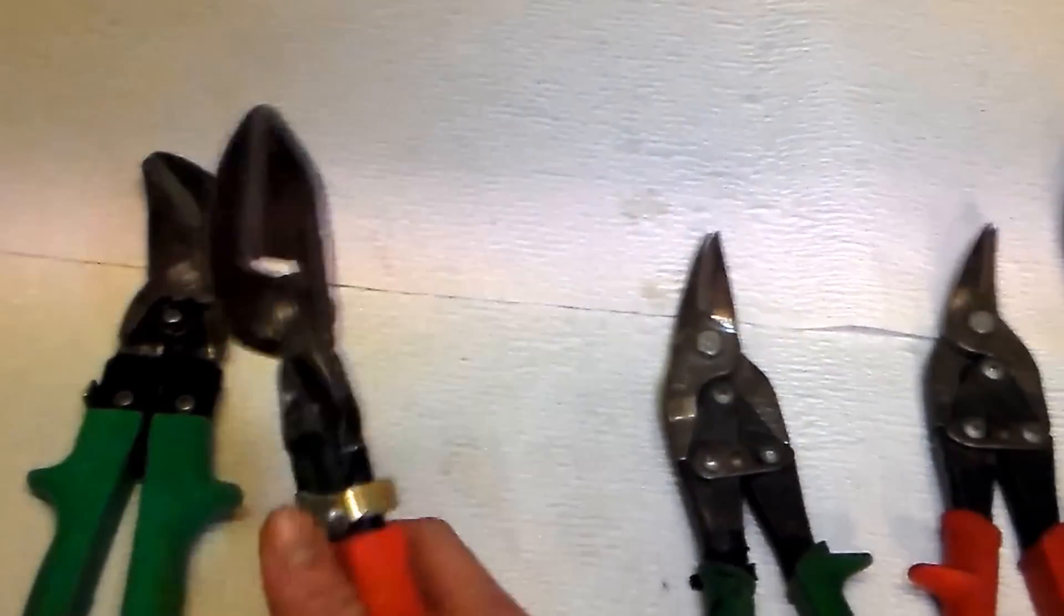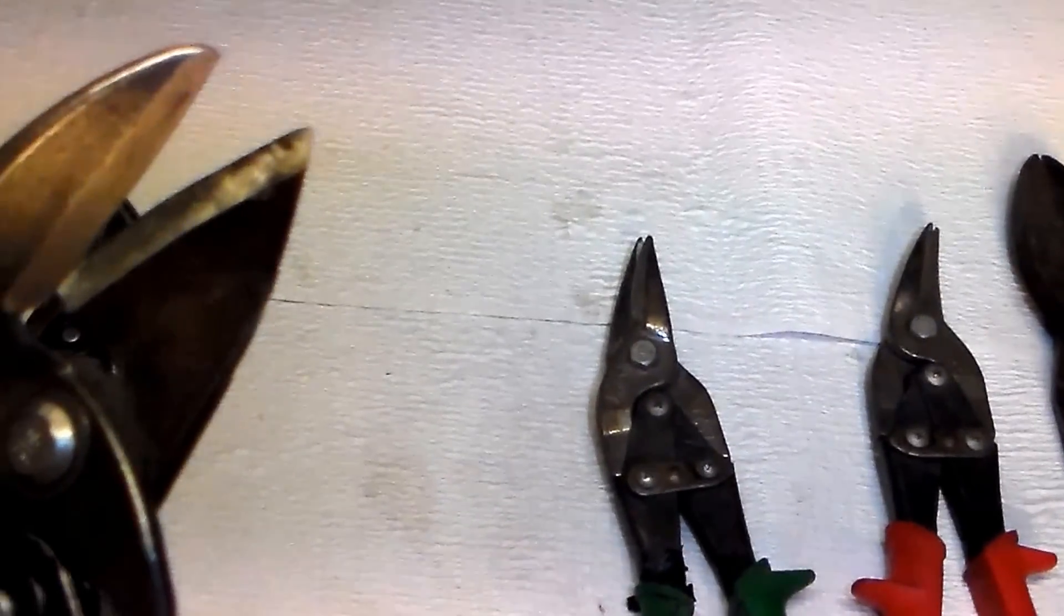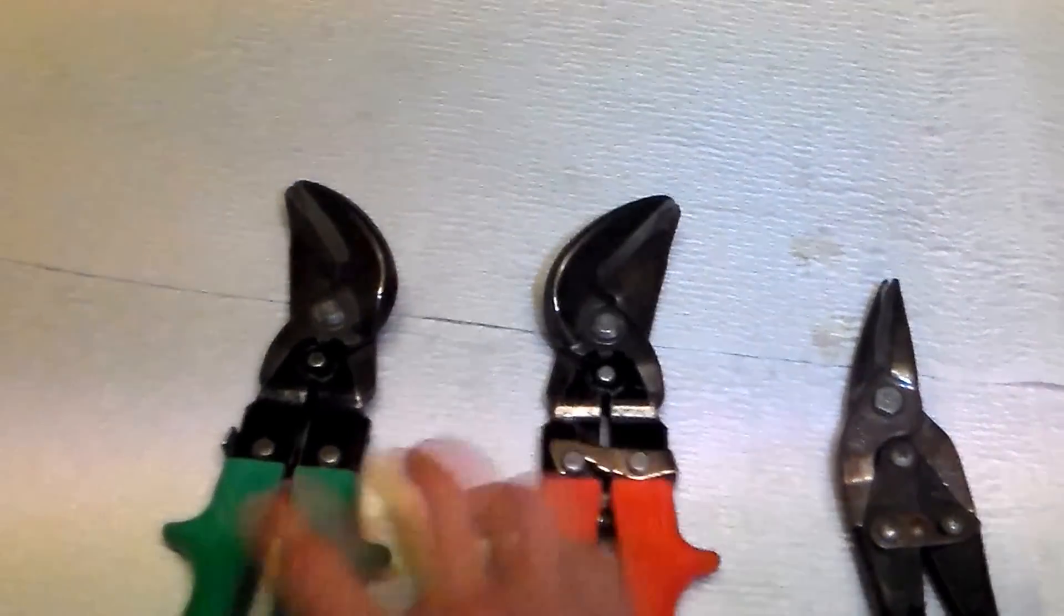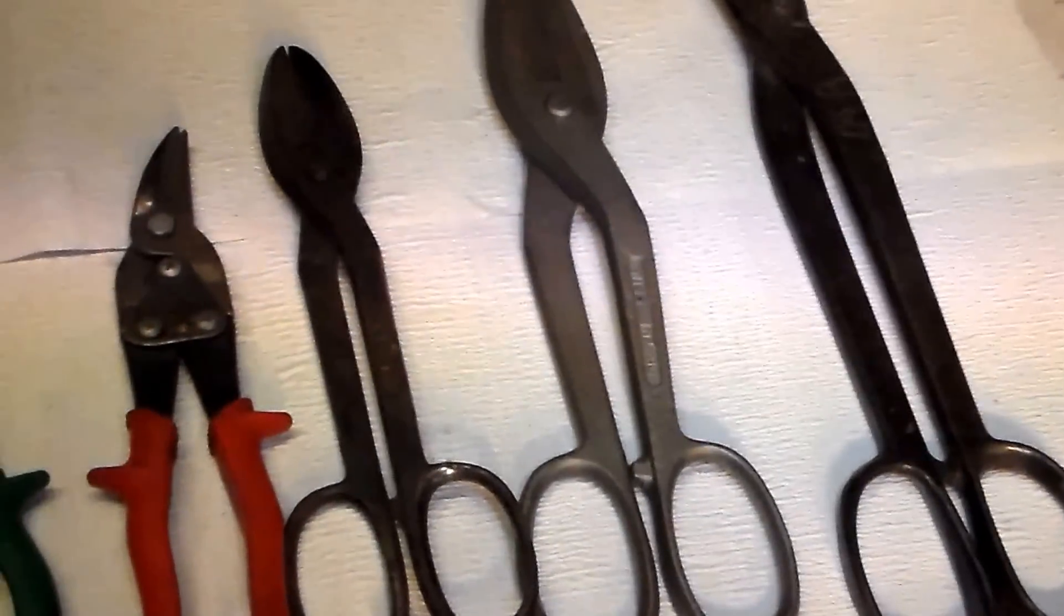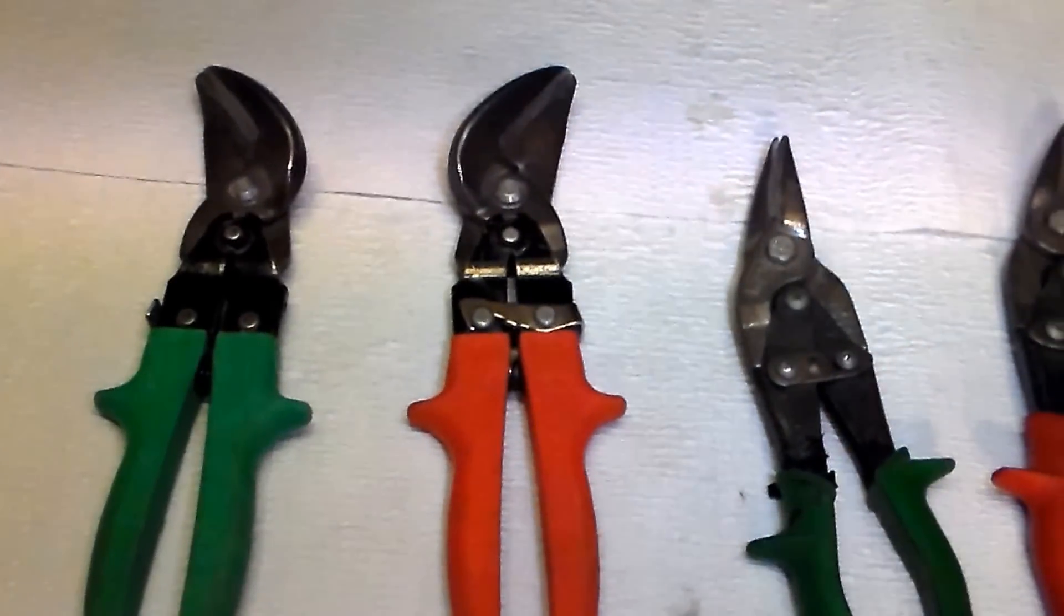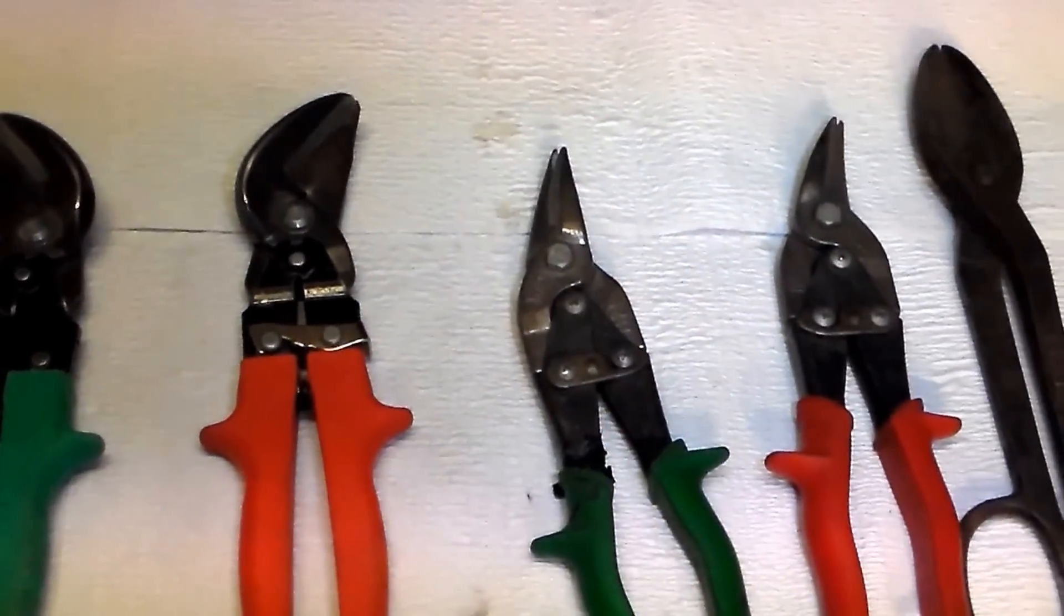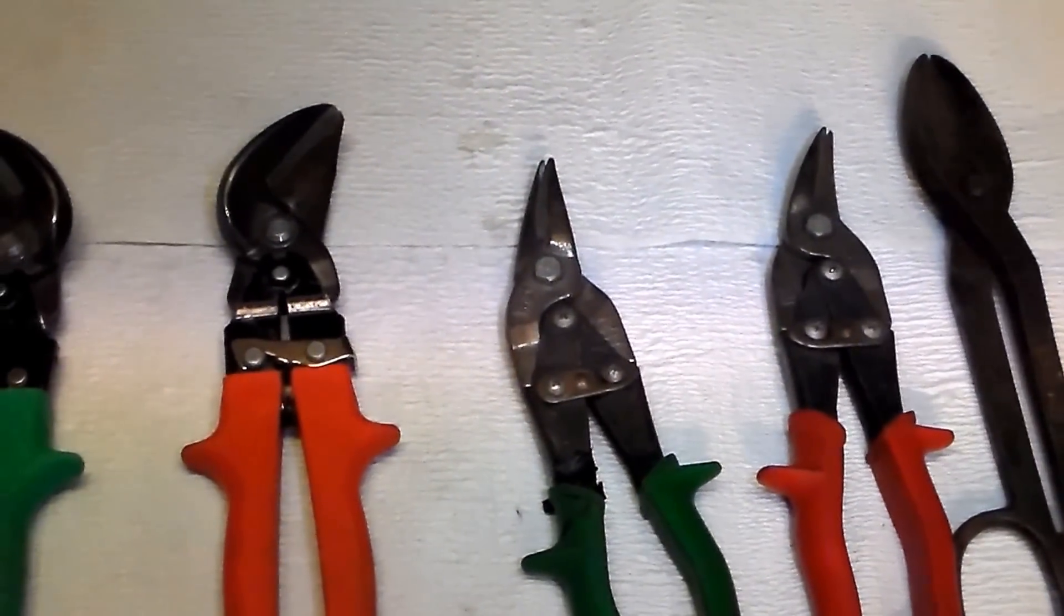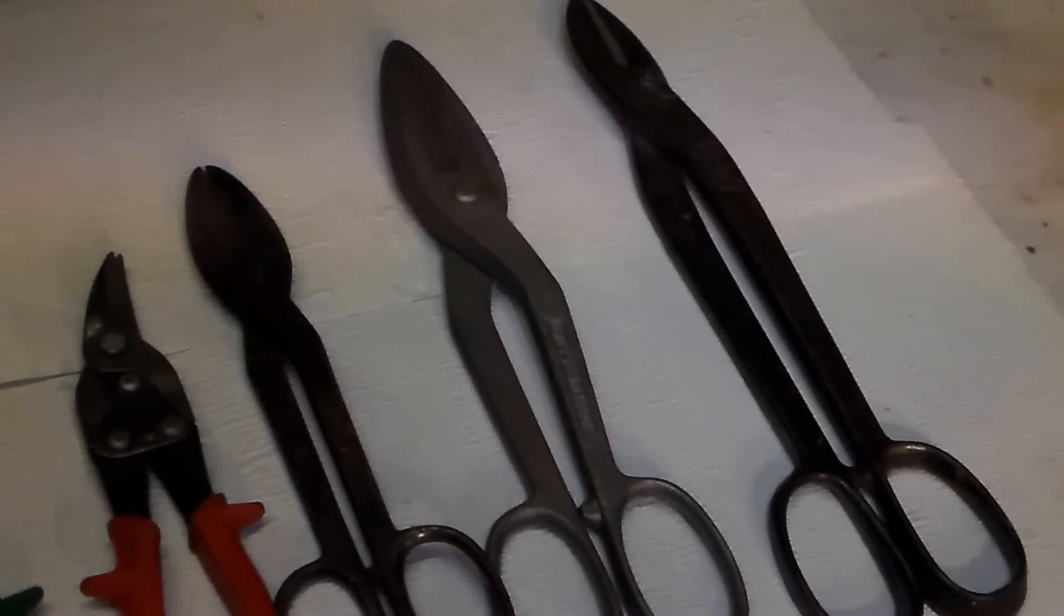And then these are the ones that I prefer. These are Malco offset non-serrated edges, so they don't leave any serrated edge on the sheet metal itself, also in reds or greens. I particularly use mostly my offsets. They take a little bit of getting used to, but those are what I'll be demonstrating with today because they also show an exaggerated version of what happens when you cut sheet metal. So let's go ahead and get to it.